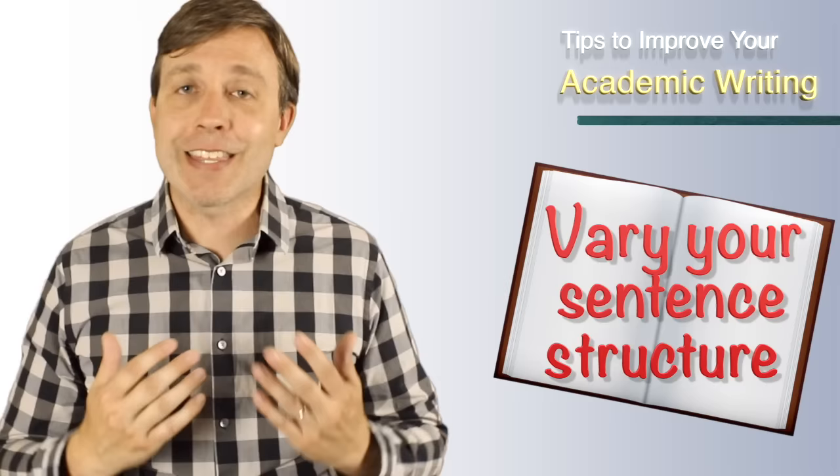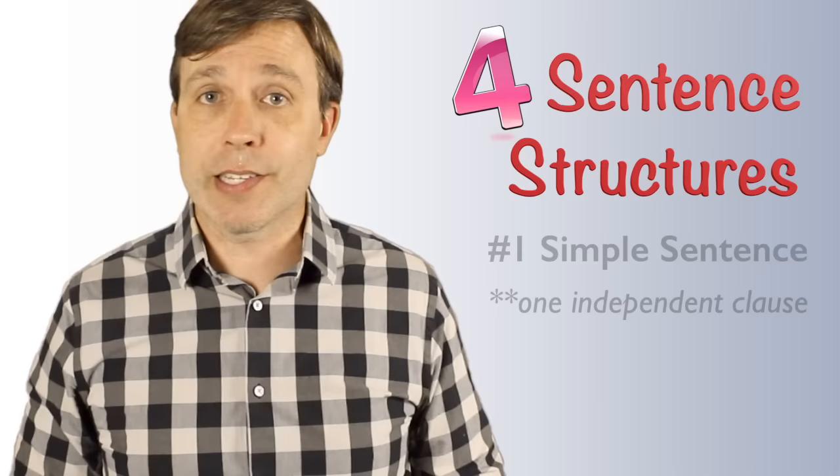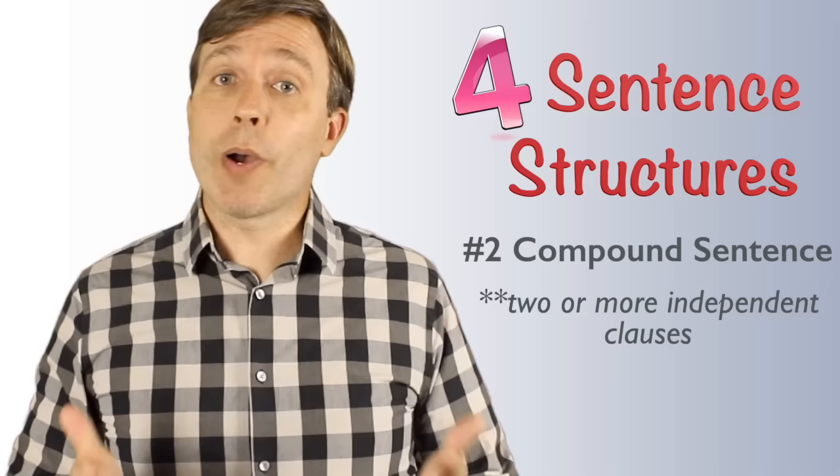The next tip is that you should vary your sentence structures. And this is going to help you avoid choppiness. And if you're unsure what that means, I'm going to tell you a little story and I think it will make more sense. But let's get into some more details about sentence structure. So there are four basic sentence structures. You have simple sentences. This is one independent clause. So if I'm going to tell you a story about my day, I could say, I woke up late this morning. It's a simple sentence.